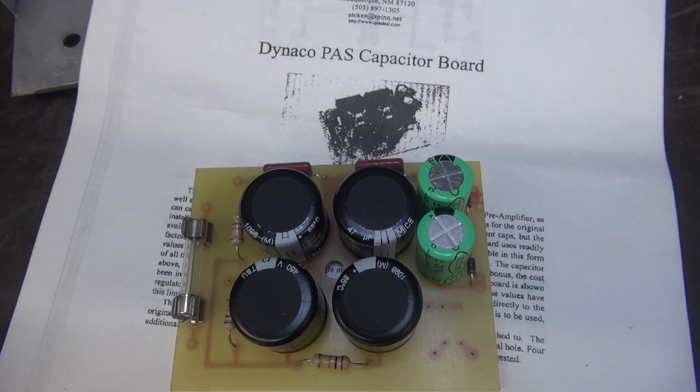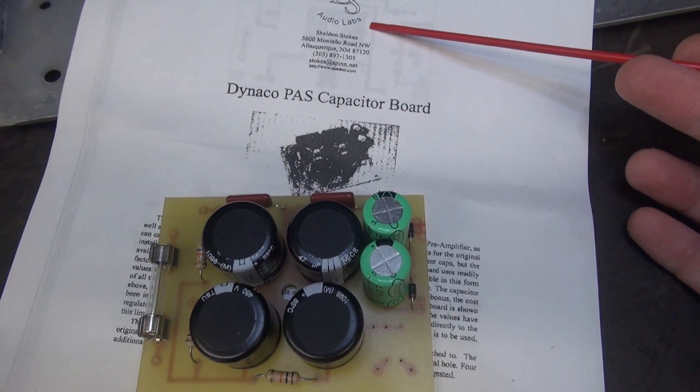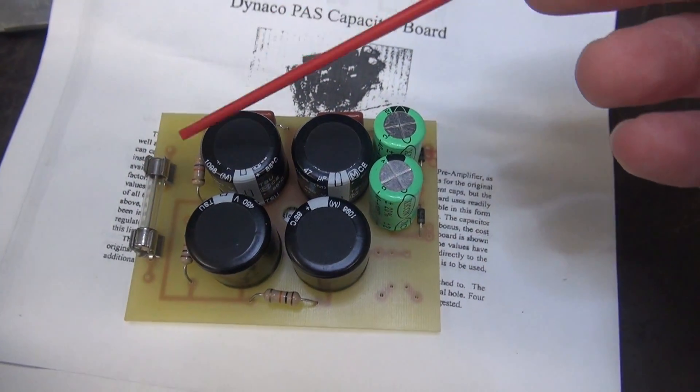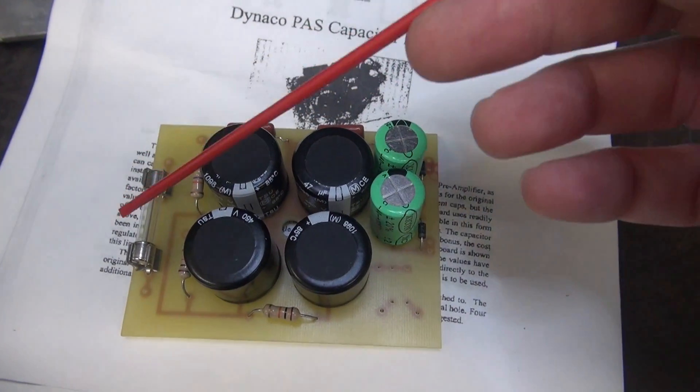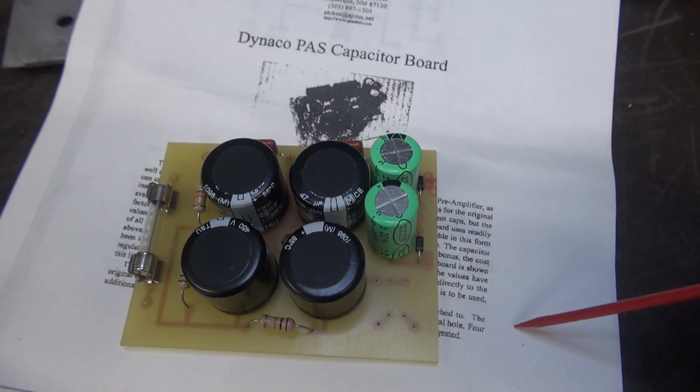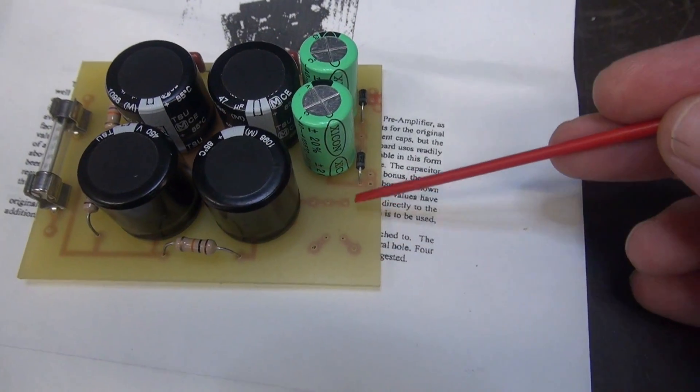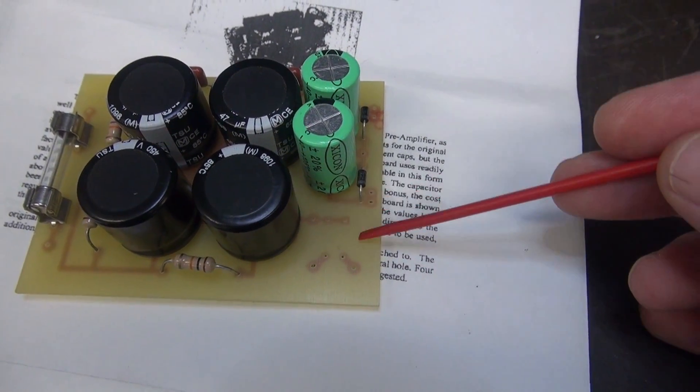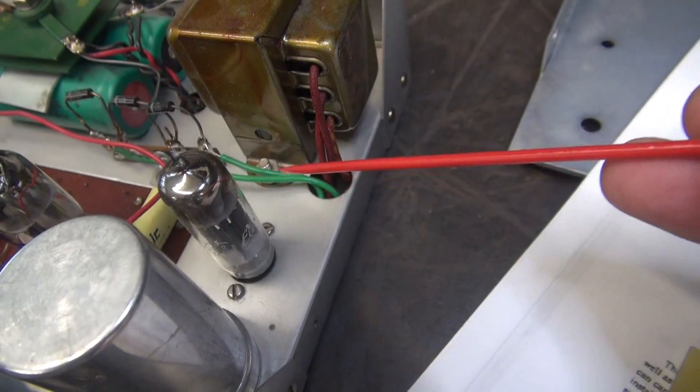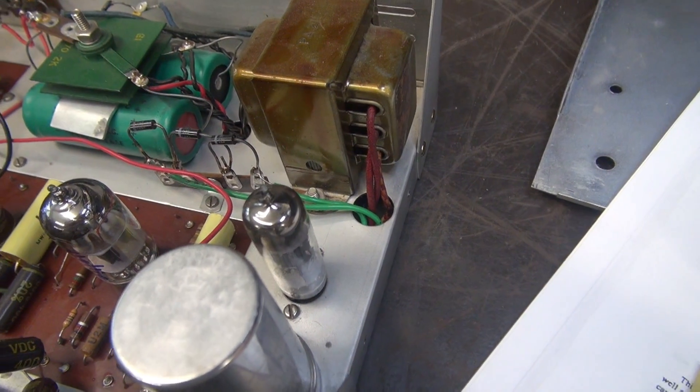All right, first little tech tip to consider if you're going to install this Dynaco PAS cap board by SDS Labs. So here's the board. We already talked about the fuse, which is a good idea. However, I really don't like bringing the 120 up to this board. I would prefer to put an inline fuse holder underneath the chassis. The other thing about this board is you will see this little pattern here. And normally, there's nothing there because they say it is an option. So you can put diodes here and not use that 12X4 rectifier tube. But they really don't go into any explanation of the benefits of that.